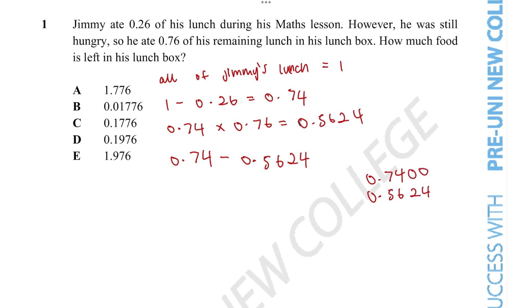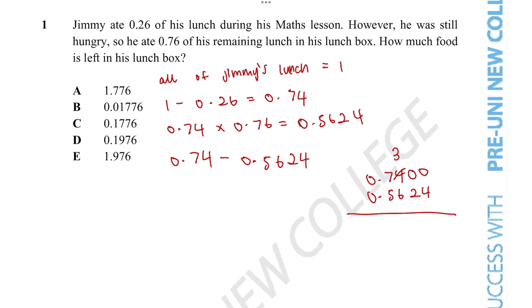So in order to do this question, we go 0.74 minus 0.5624. We can add a 0, 0 after, just for comfortability. And then we just quickly minus. That'll be 3, 9. 10 minus 4 is 6. 9 minus 2 is 7.